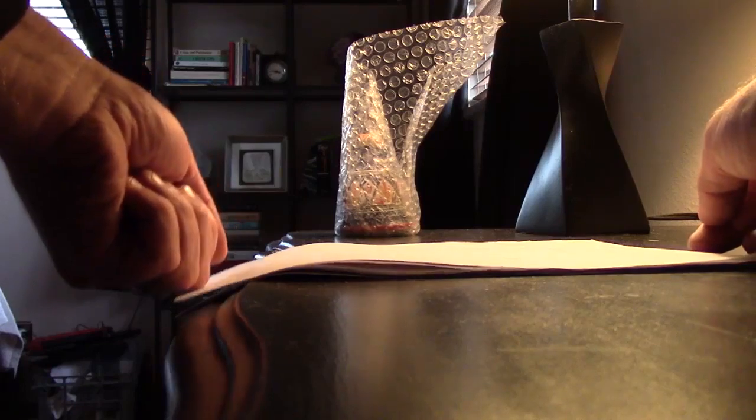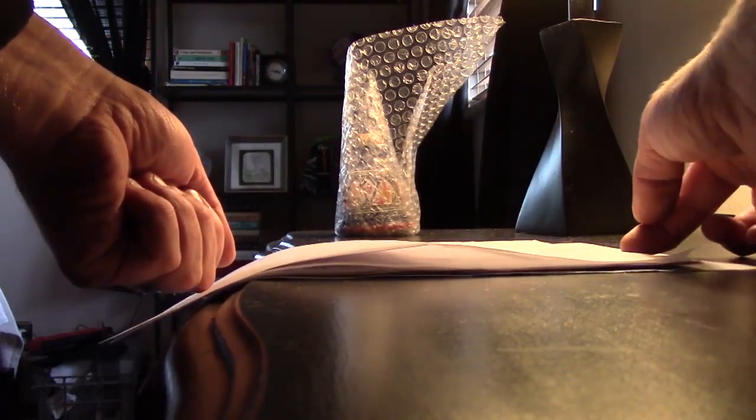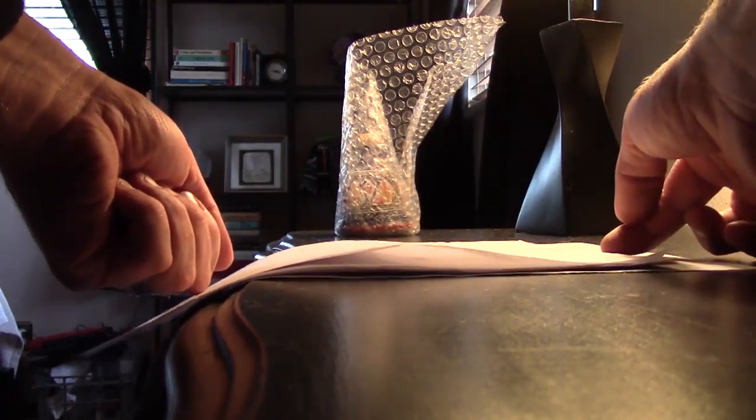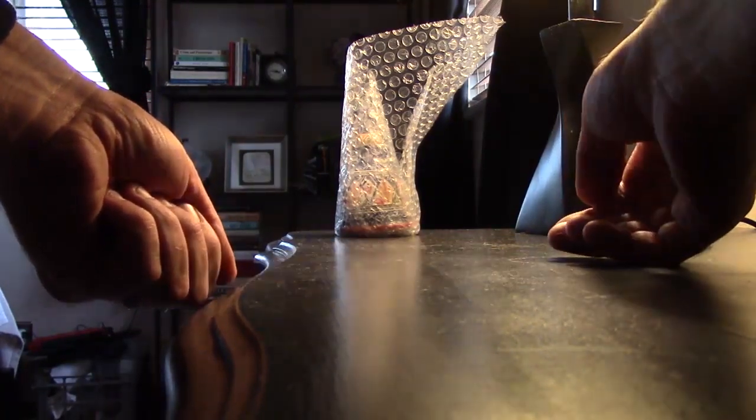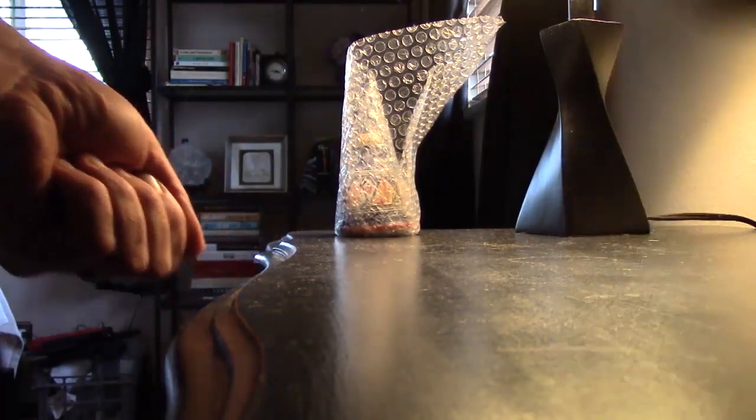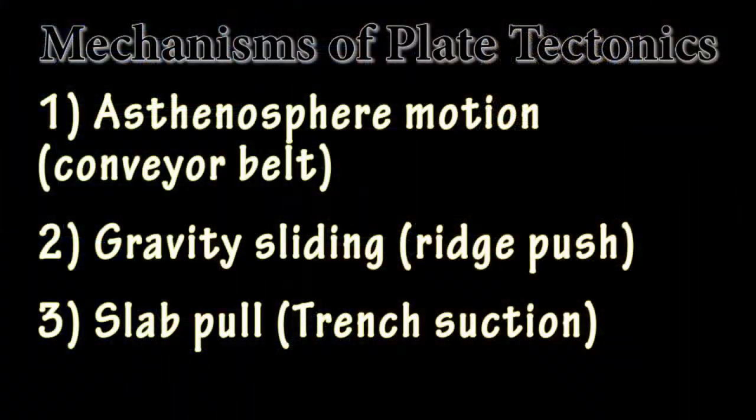The leading edge of the stack was pulling with a normal and shear force, dragging the rest of the stack down with it. To complete the analogy, imagine if, as the papers went over the edge, they got denser and denser, thus pulling harder and harder on the rest of the slab behind. This final mechanism is called slab pull.